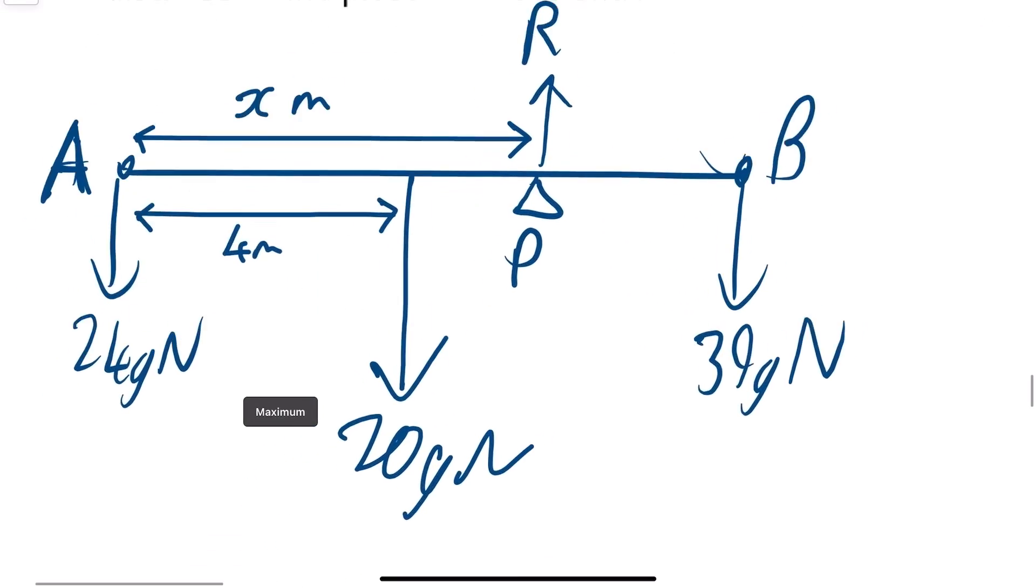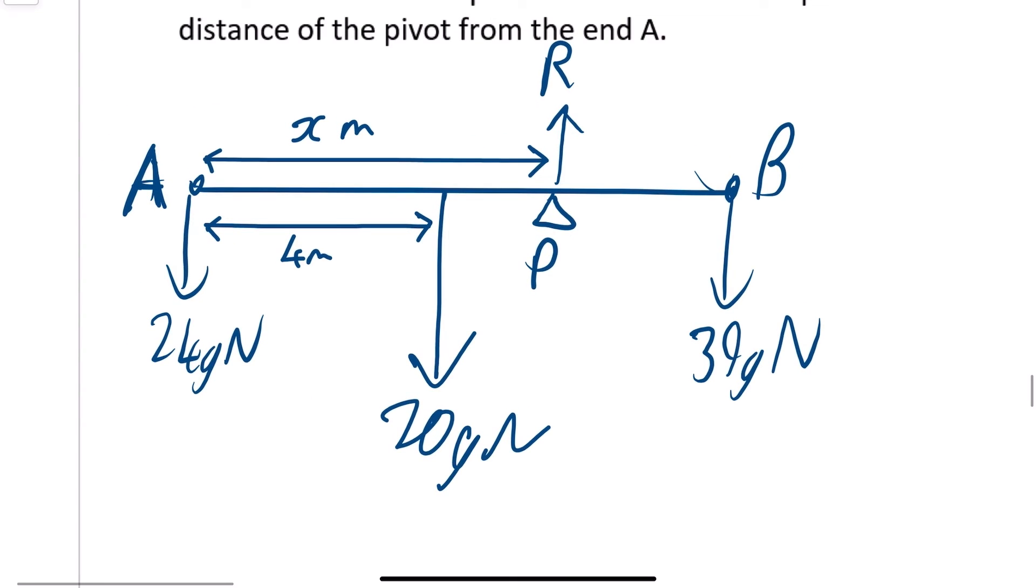You can see in this example here I have drawn this out. I've got my A, and there's a 24 kg so 24g, that's the weight. At B, there's a 39 kg, so 39g is the weight. And the center of mass is 4 meters from each end, and so it is 20g as the mass of the plank. And you can see I've marked this on as X is from A. That's what we're trying to find.